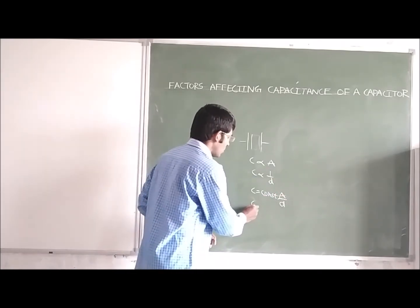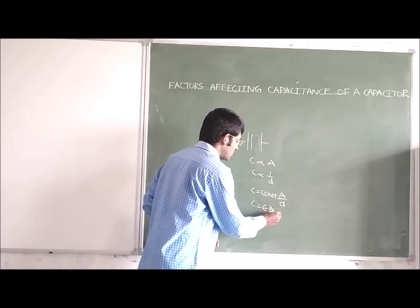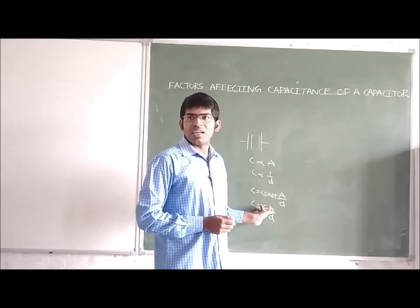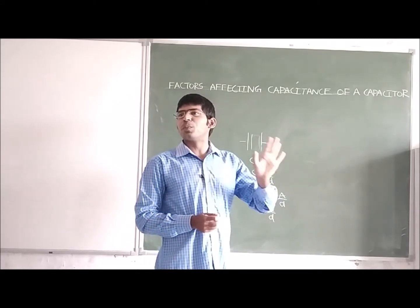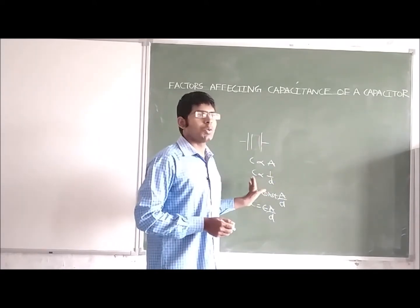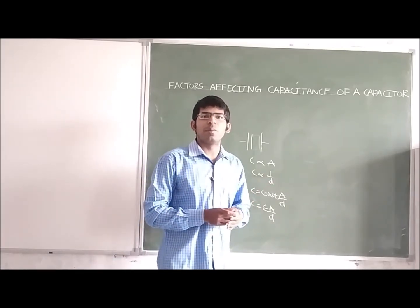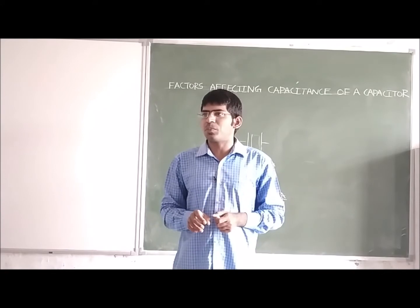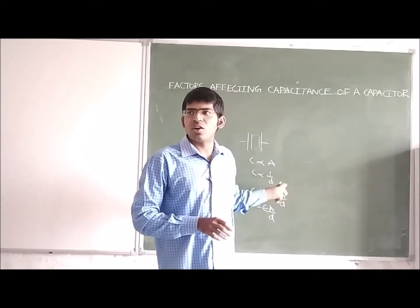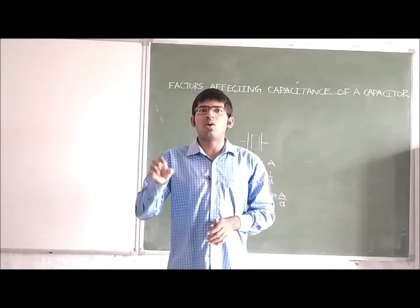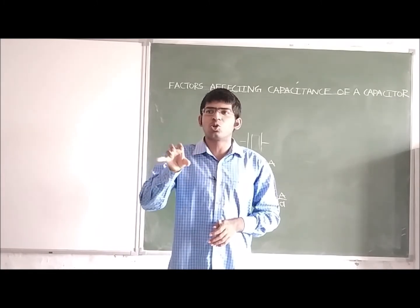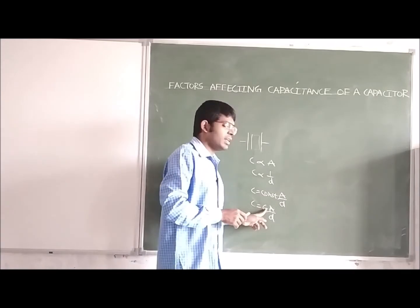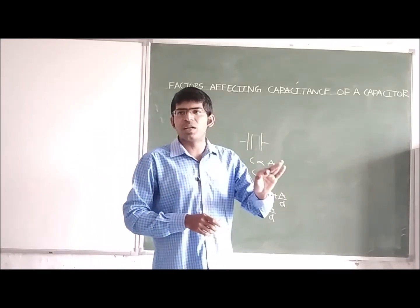So the formula becomes C equals epsilon times A divided by D. This epsilon is the permittivity of the medium — the ability of the medium to allow electric field lines through it. This permittivity tells us how many electric field lines can be stored in the capacitor, and it is fixed for every material.